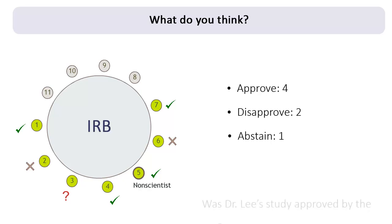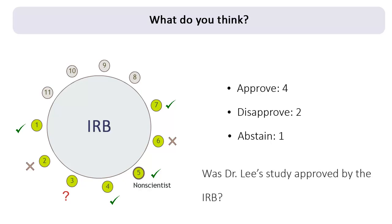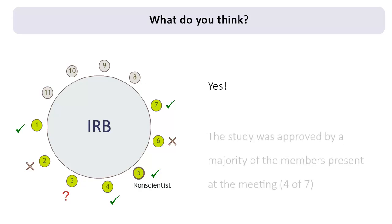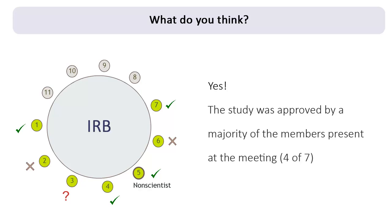Was Dr. Lee's study approved by the IRB? Yes. The study was approved by the IRB because a majority of the members present at the meeting—four of the seven in this case, where the abstaining member counts as one of the seven members present—voted to approve the study.